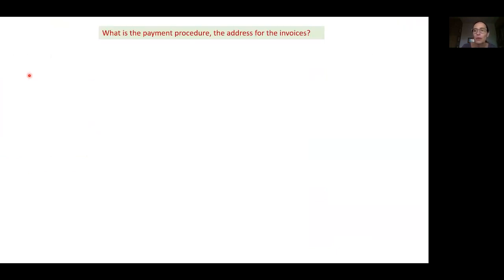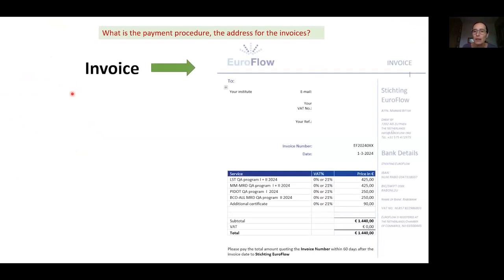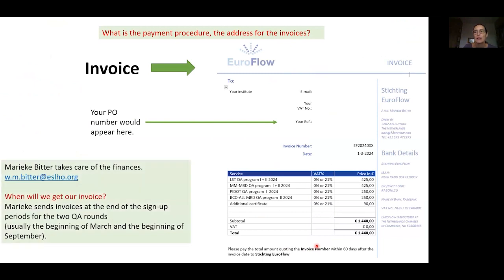When you sign up for a QA round, Marieke sends an invoice for the payment. This is how the invoice is going to look like next year. Marieke sends the invoices at the end of the sign up periods for the two rounds which is usually the beginning of March for the laboratories who sign up for the first or both rounds and the beginning of September for the ones who sign up for the second round only. When you receive the invoice you have to pay for the QA otherwise you won't be able to access your certificate of performance.